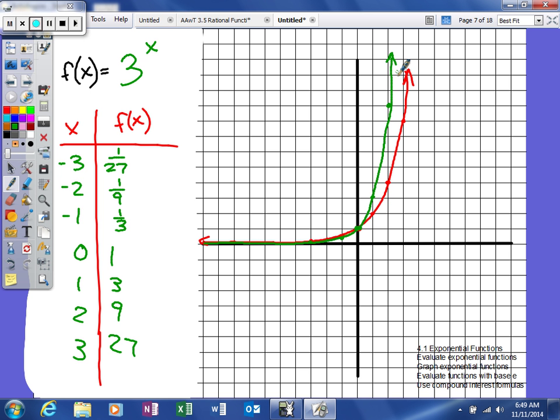Now one thing you should start to see in terms of characteristics of all exponential functions is that all exponential functions, unless we move our function left, right, up, or down, you'll have a y-intercept of (0, 1). And the reason being is because anything to the 0 power will give us 1. So all nice little exponential functions will have that value.